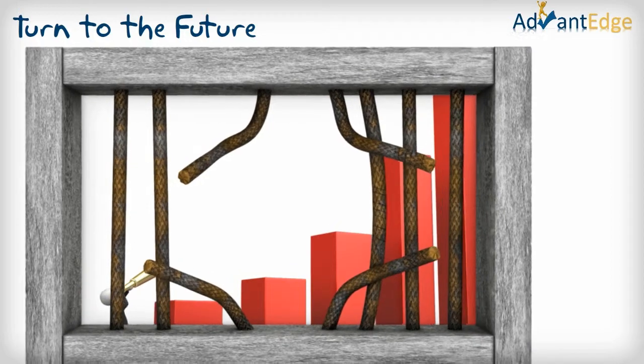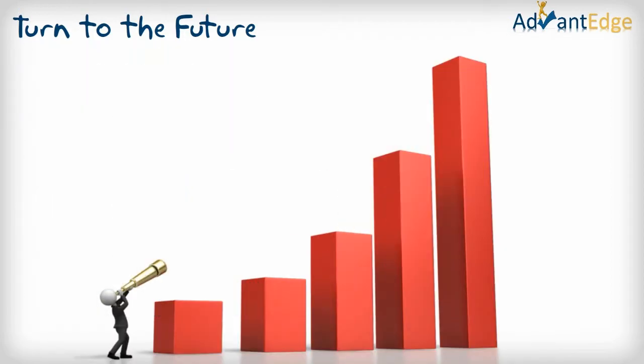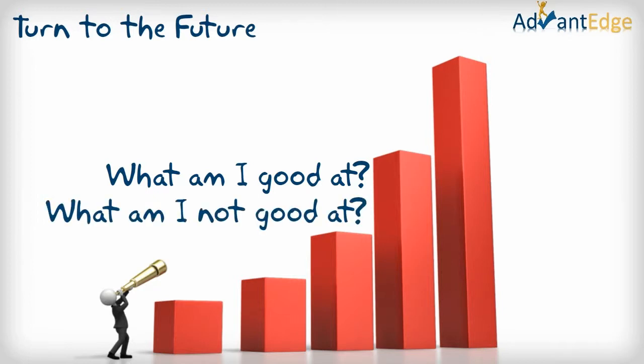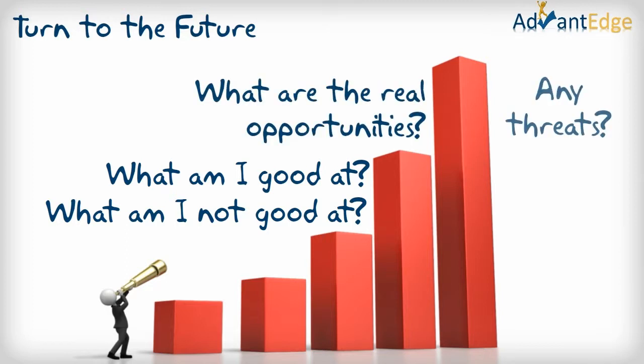We're going to do three main exercises in this module. We'll start by examining what you're good at, your strengths, and what you are less good at, your weaknesses. We'll also examine the real opportunities you have and the potential threats to what you want to accomplish.